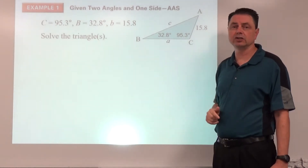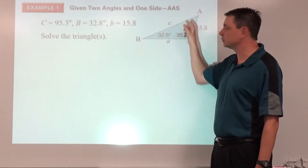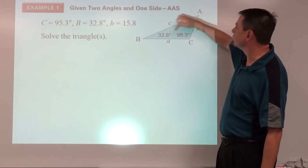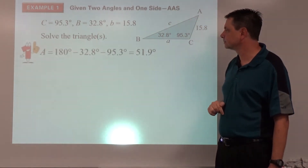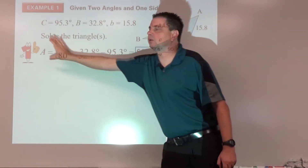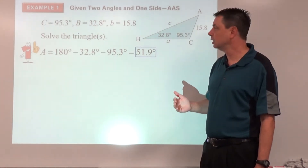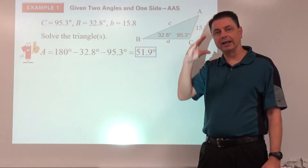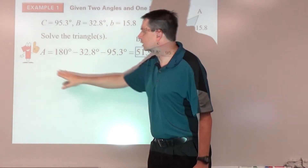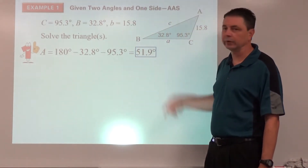That should be pretty easy to do. We use the triangle angle sum theorem, which says all three angles add up to 180°. So 180 − 95.3 − 32.8 gives us the missing angle. Here we use capital A to mean the measure of angle A. So angle A is 51.9°.